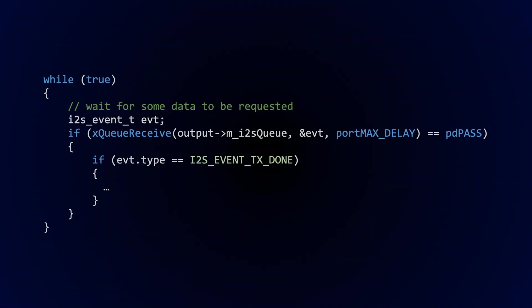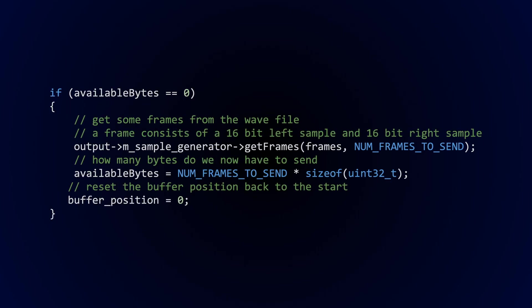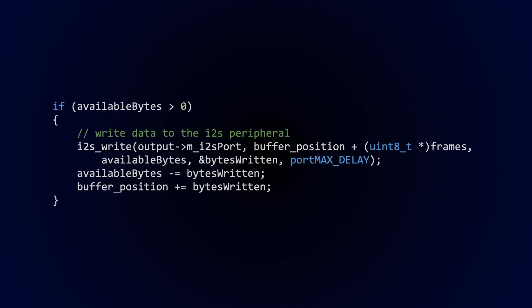Sending data is pretty straightforward. We wait for the I2S peripheral to reach the end of one of its DMA buffers. Then we pull some samples from our sample generator and then write those samples to the I2S peripheral.